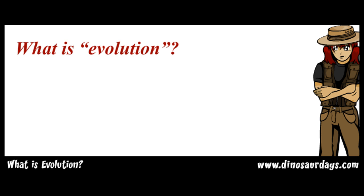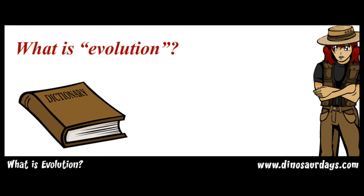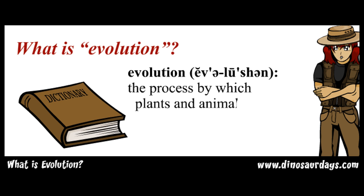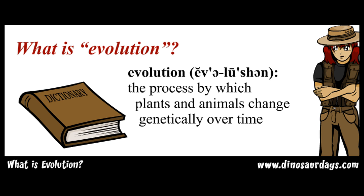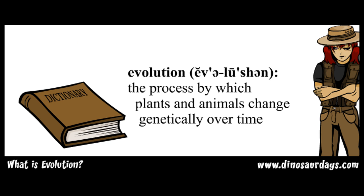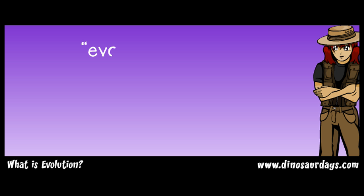What is evolution? The dictionary says that evolution is the process by which plants and animals change genetically over time. So what does that mean? Basically, evolution means change.